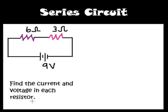We have a series circuit here. We can tell it's a series circuit because the electrons can only flow in one path. We have two resistors: a 6 ohm resistor and a 3 ohm resistor, and we have a 9 volt battery.